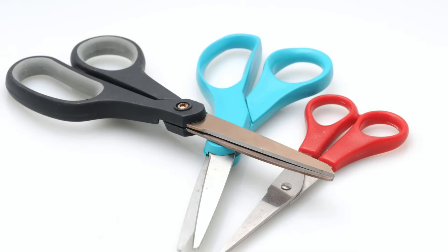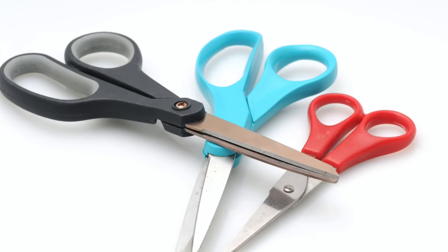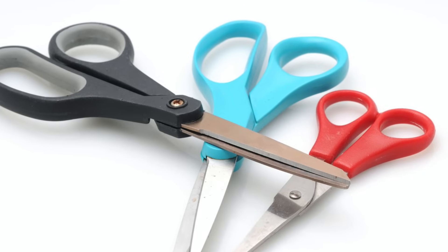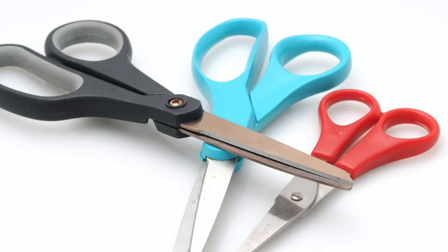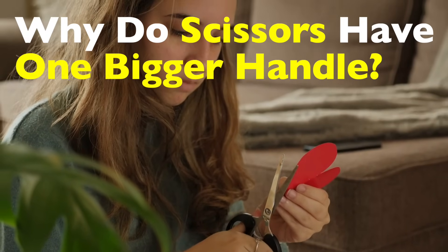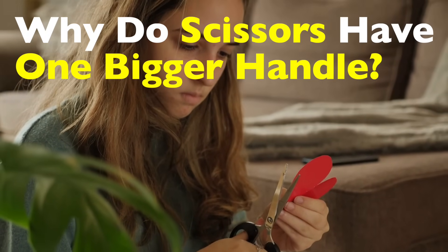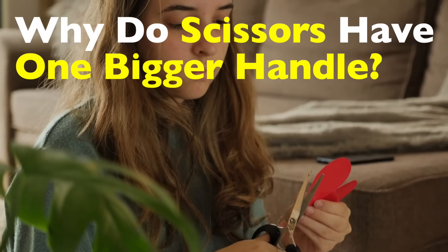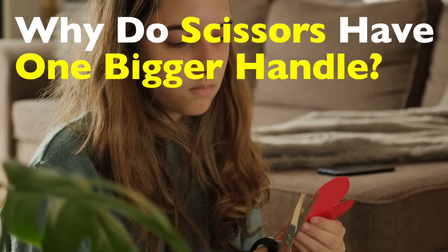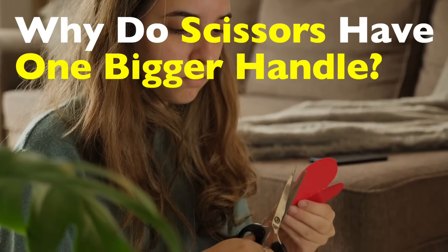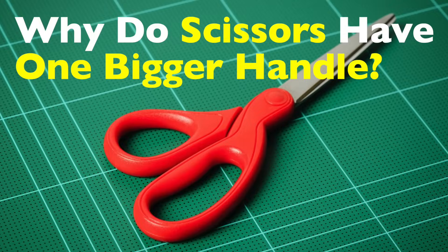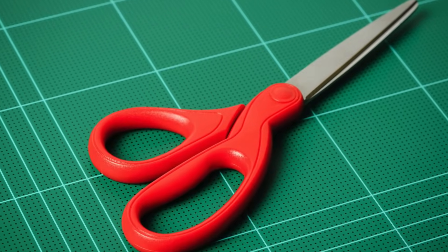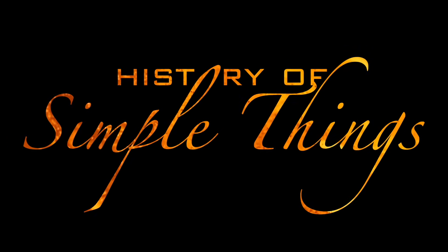It's one of those design quirks that feels completely natural in your hand, until someone points it out. Then it's all you can think about. Why are scissors like that? Was it an aesthetic choice? A manufacturing shortcut? Or is there some hidden ergonomic science behind it? Today we're slicing through the mystery behind this peculiar design and uncovering why one hole on your scissors is always bigger than the other, right here on History of Simple Things.